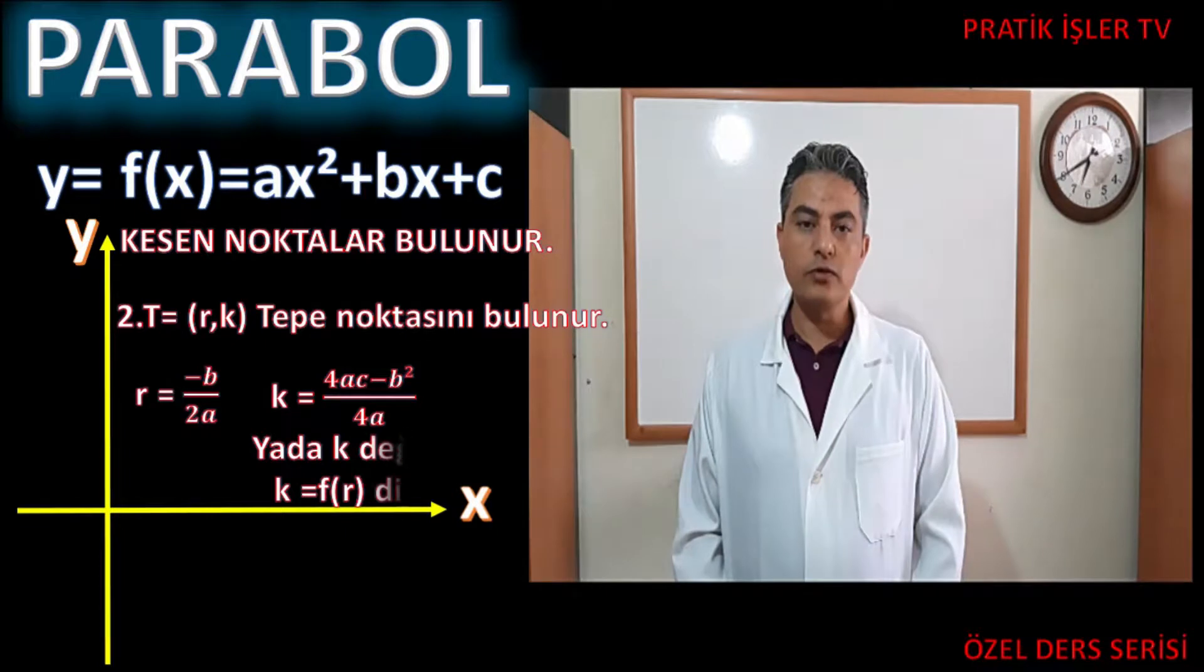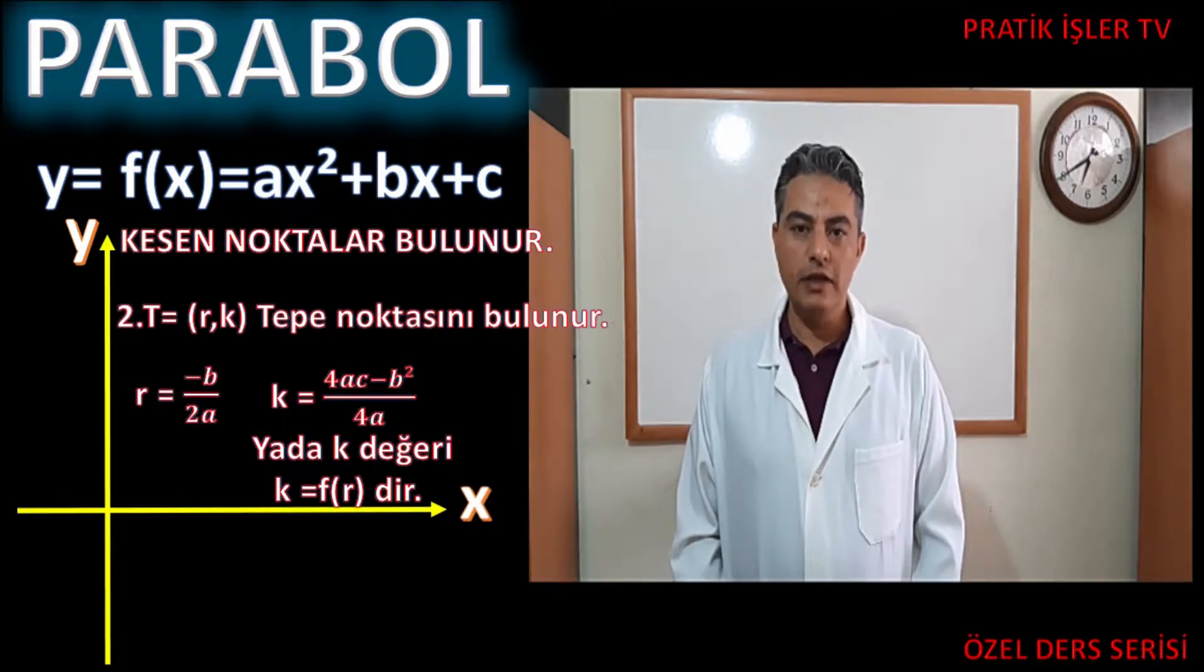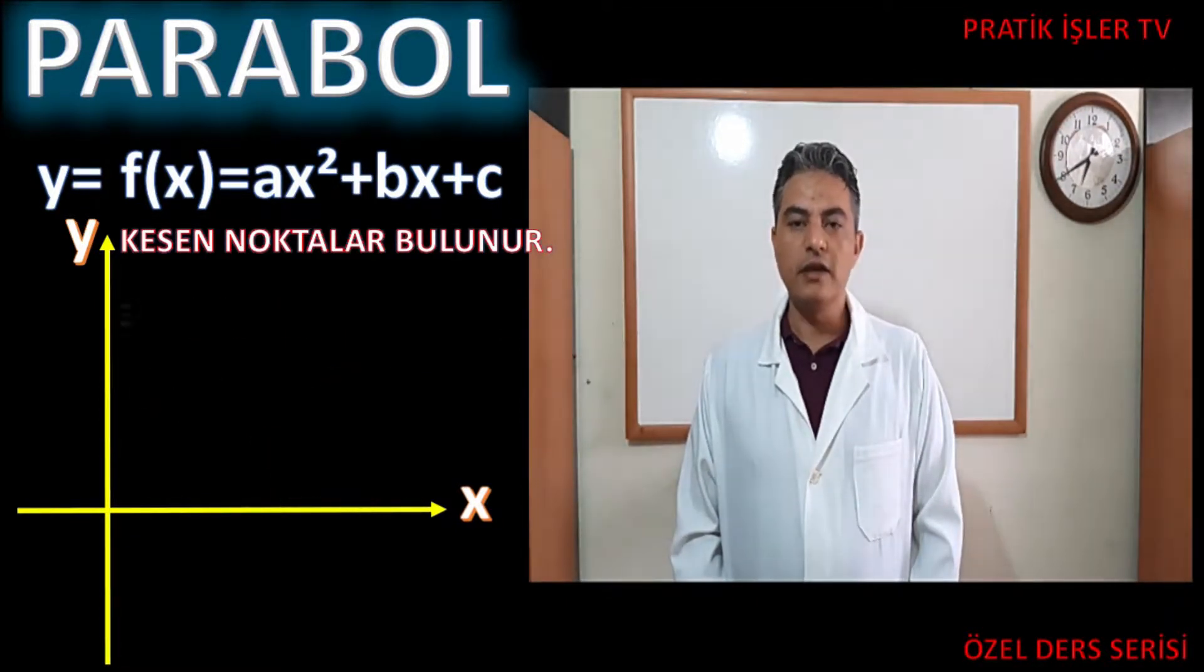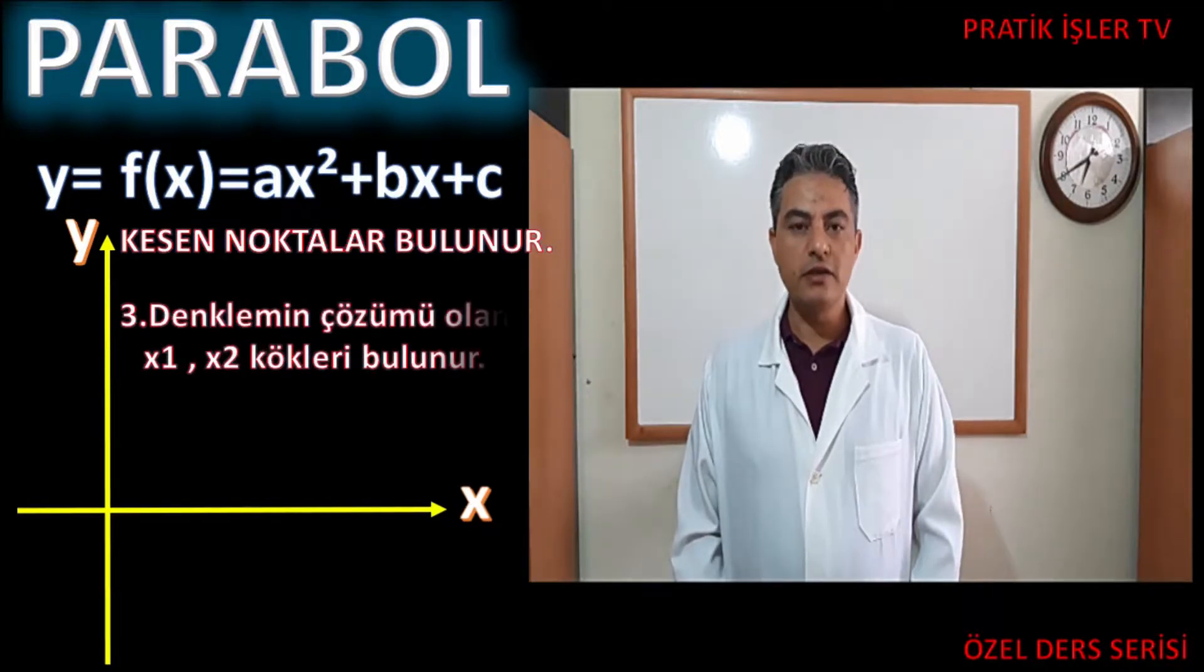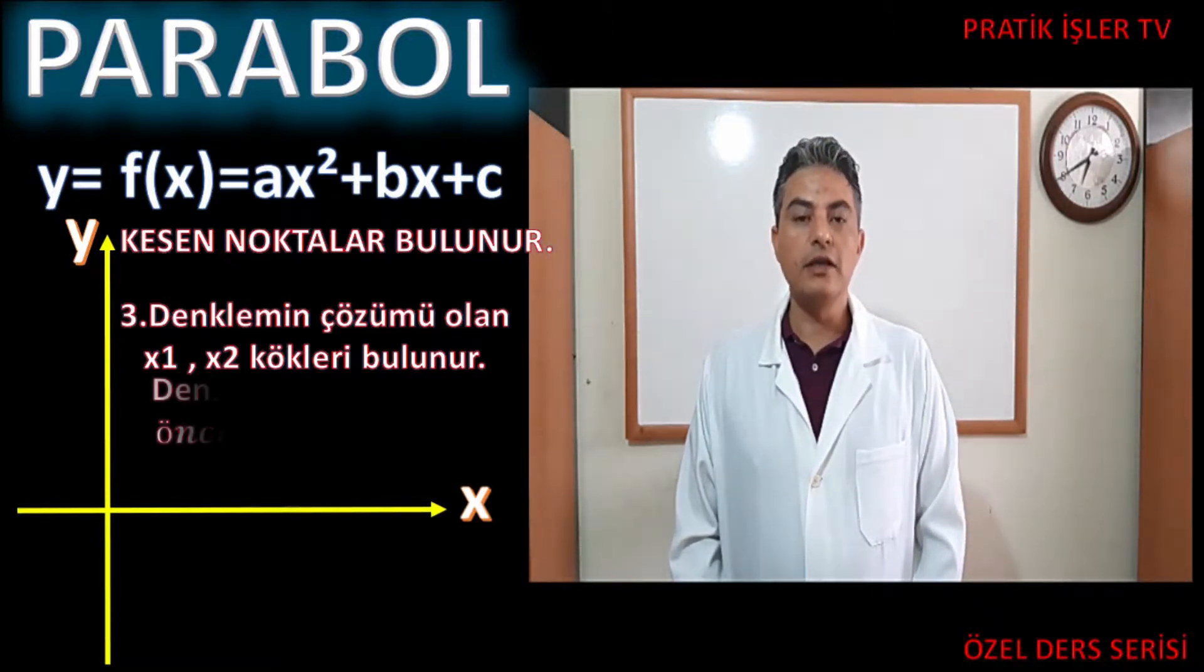Bu durumda fonksiyonda x gördüğünüz yere bulduğunuz r değerini yazarsanız yine k'yı elde edebilirsiniz. Parabolün x eksenini yani absisi kestiği noktaları tespit etmek. Bunun için de daha önce ikinci derece denklemlerde kök bulma yöntemi olan delta'yı hesaplarız.